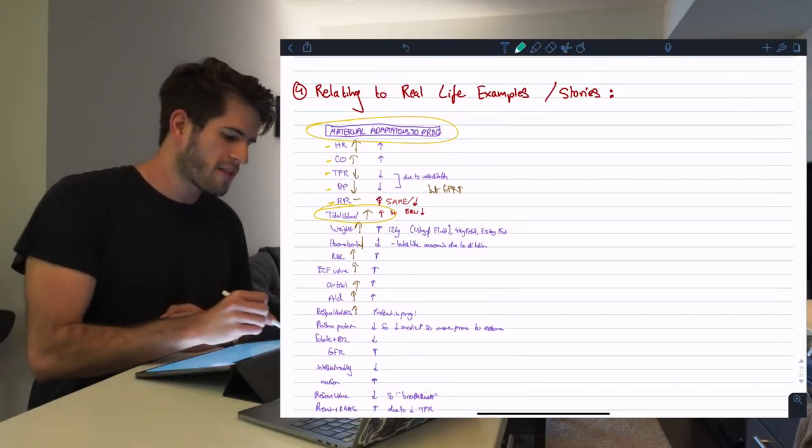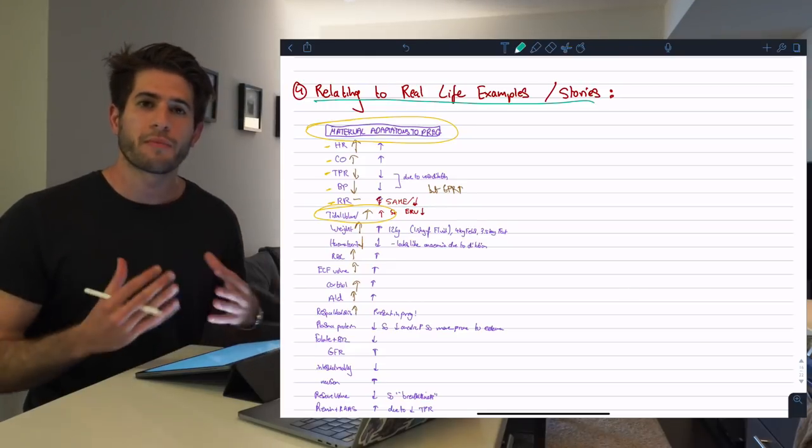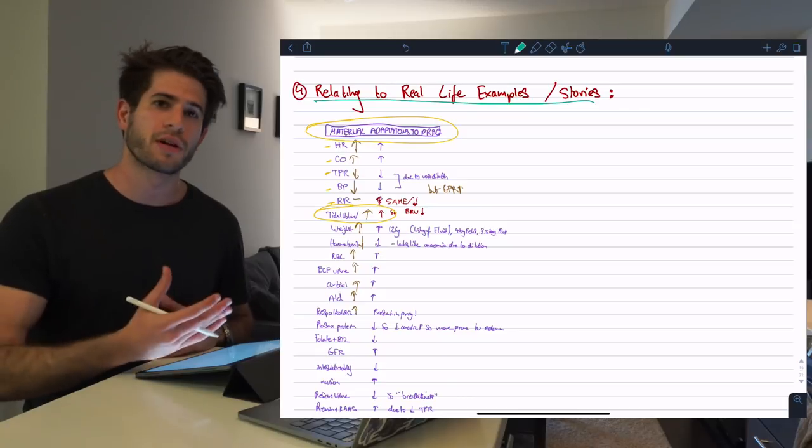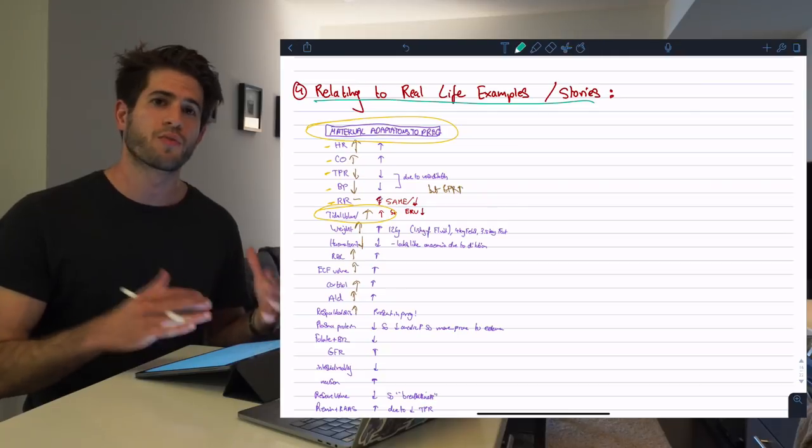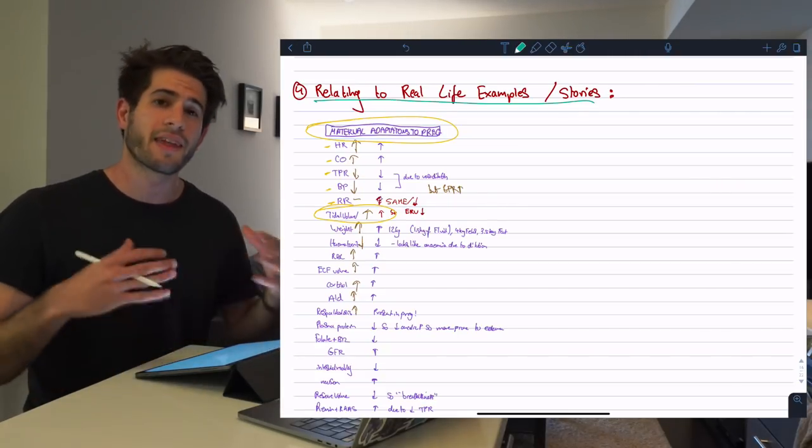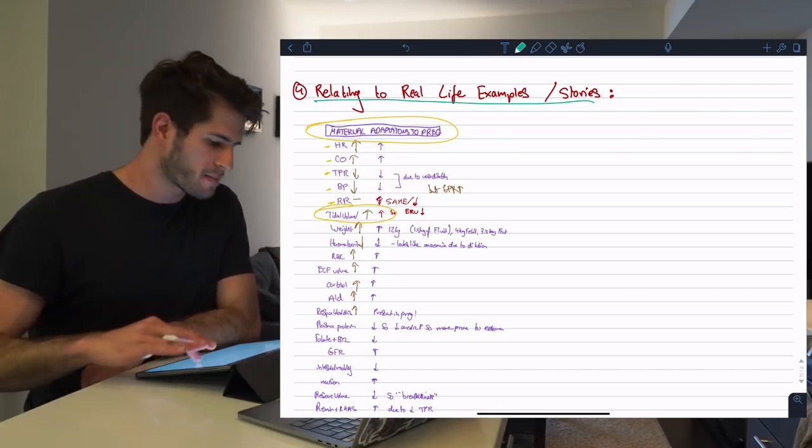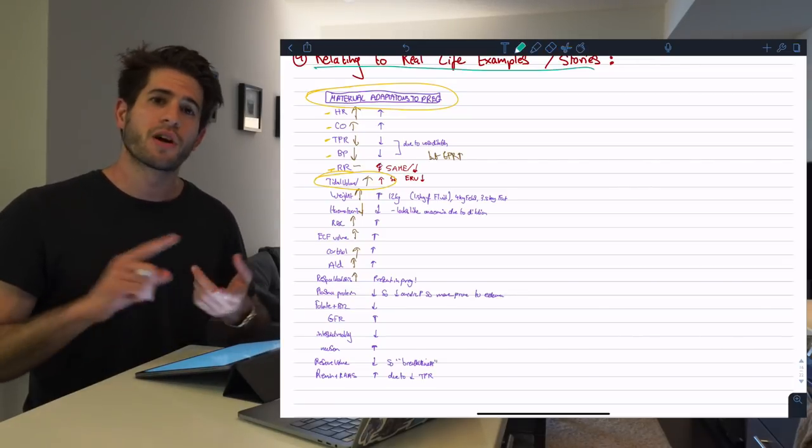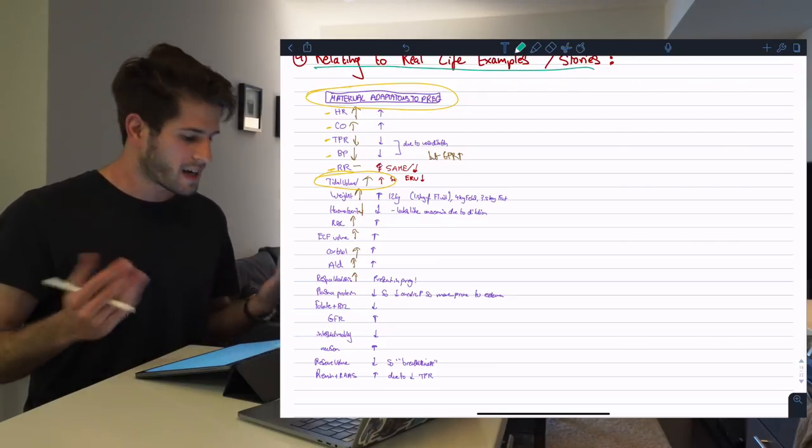Moving on to the fourth tip or technique, it's relating to real-life examples or stories in your head. When you read a piece of information, when you think about a piece of information, something that is most beneficial to me is thinking back to the hospital, thinking to the GP, and trying to remember a time or situation where I saw a patient with X disease or where I saw a patient with X sign. An example of where I used this when studying for my exams, we had to remember a lot of different changes that occur in a pregnant woman. So for example, cardiovascular changes, respiratory changes, hematological changes. As you can see here there was a very long list of them.